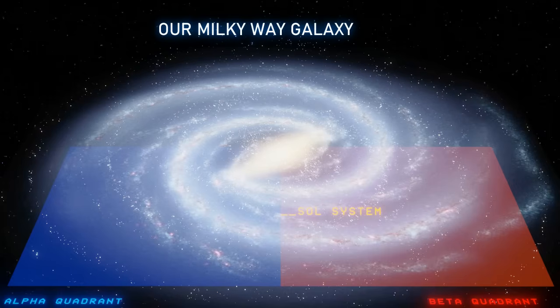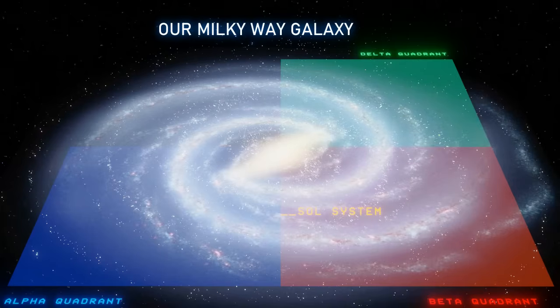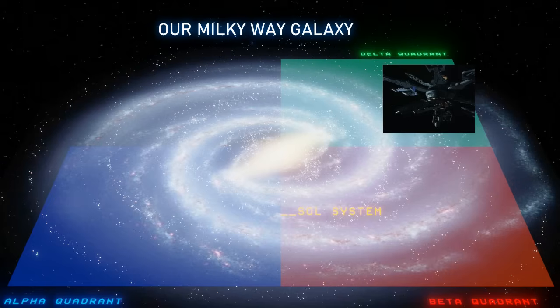The Delta Quadrant is mostly unexplored, but is where Voyager and Captain Janeway were transported by the Advanced Ancient Caretaker Array, and forced to start a long journey home. Voyager managed to explore a lot of the locations along this journey. The Delta Quadrant is also the home to the Borg Collective.